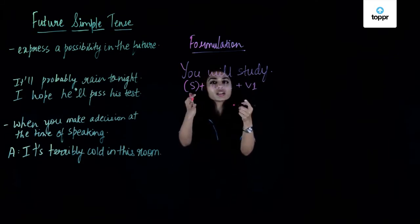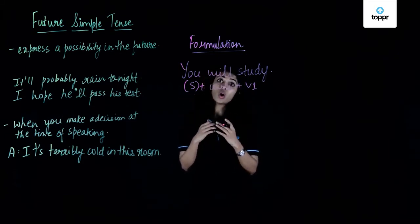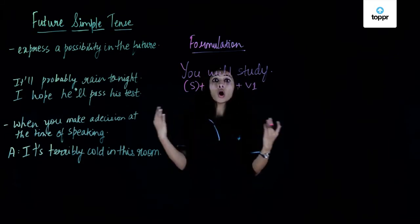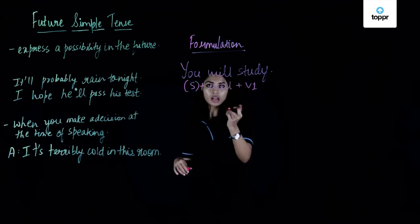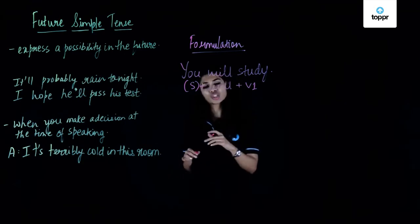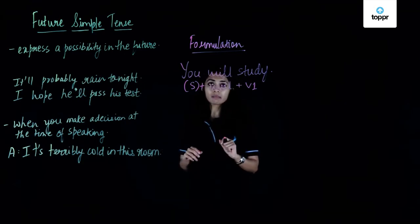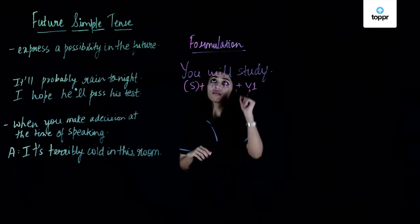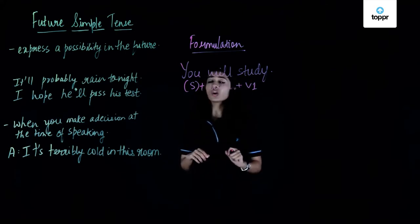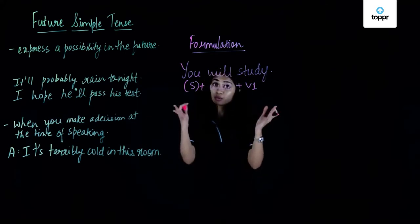So it's: you will study, I will study, we all will study, they will study, he or she will study, my friend Sara will study. That's the formulation of the future simple tense.